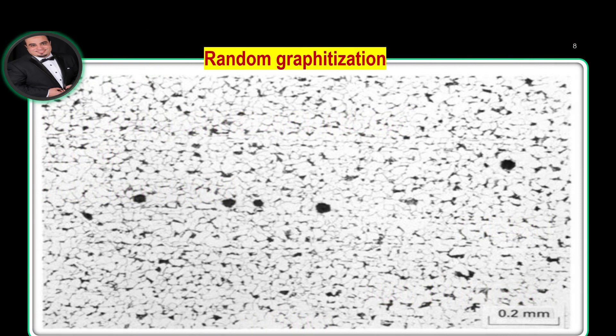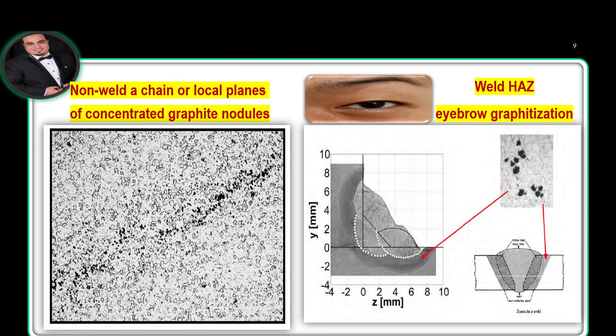Random graphitization is shown in a metallography image. Non-welded chain or local planes of concentrated graphite nodules are shown in the left metallography image. An example of weld heat affected zone eyebrow graphitization is shown in the right image.